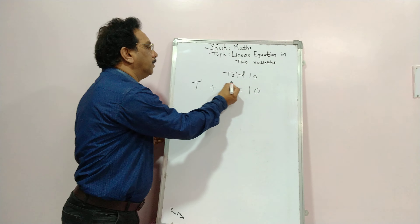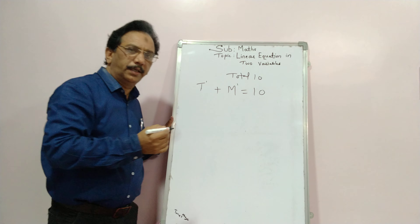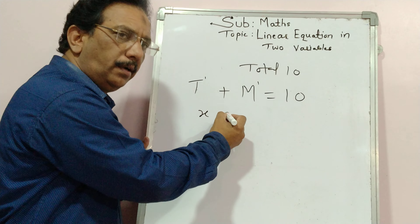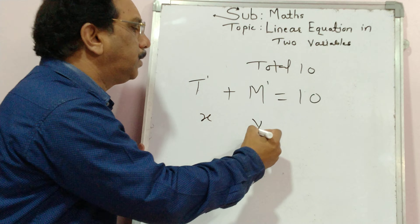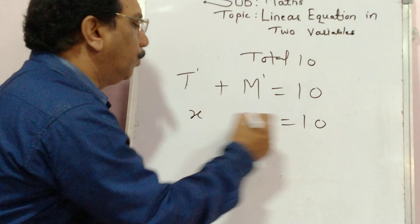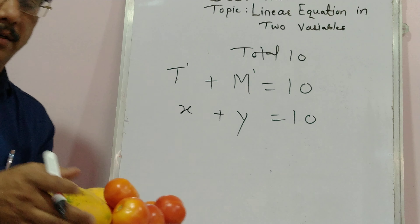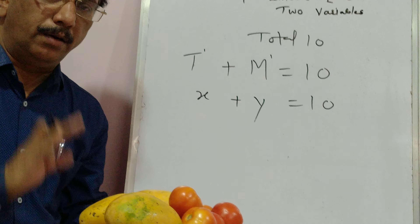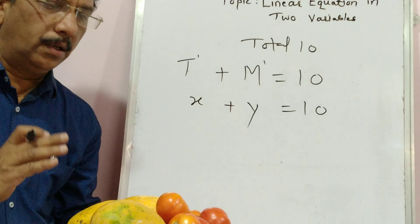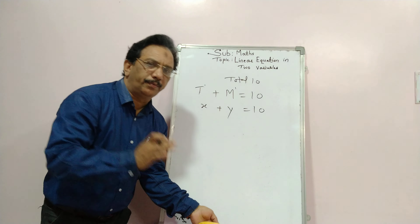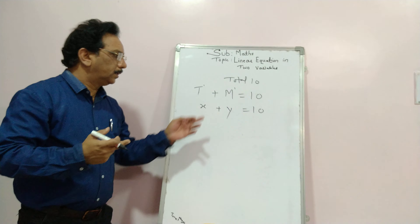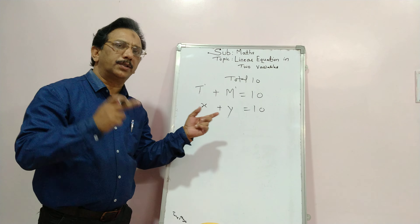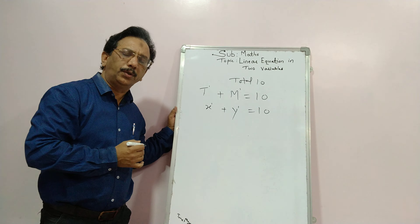The degree of each variable is 1. Let us represent tomato by x and mango by y, so x plus y is equal to 10. A plate carries two objects — tomato and mango — both totaling 10. This is a statement of equality, called an equation. It has two variables and the degree of each variable is 1, so this is a linear equation in two variables.